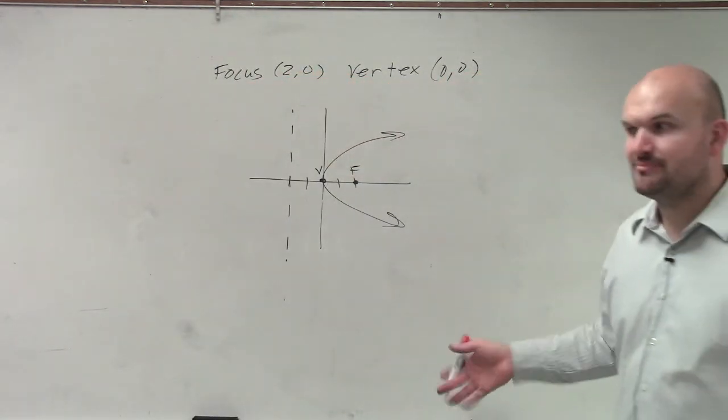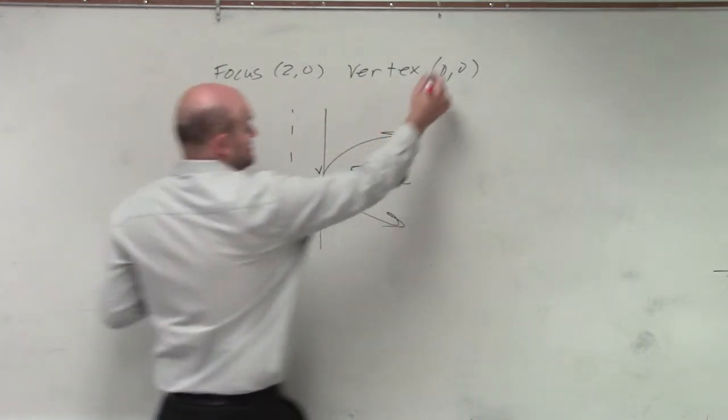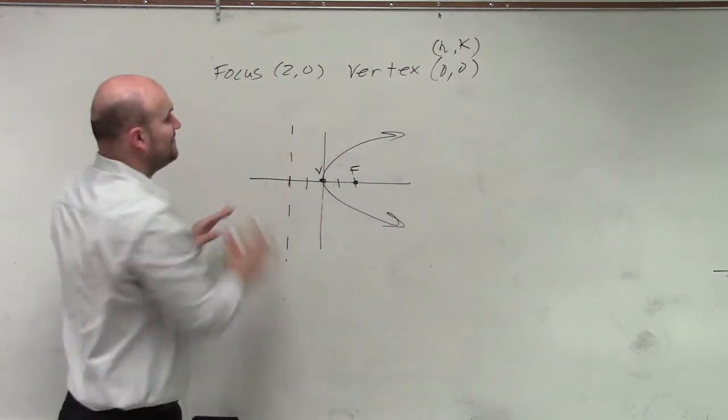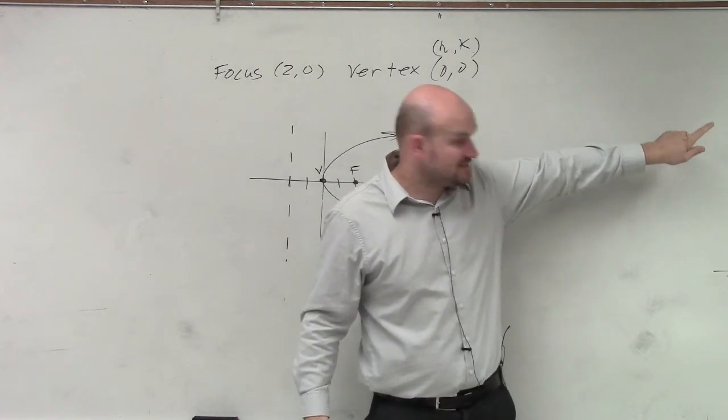But the problem is we don't know what the equation is. But that's okay, because we know what the vertex is. That's h and that's k. We have a horizontal parabola, so that's our equation.